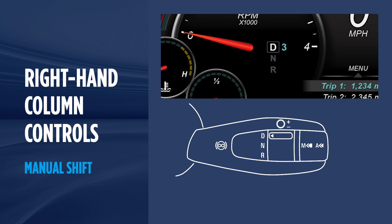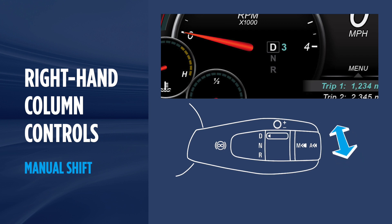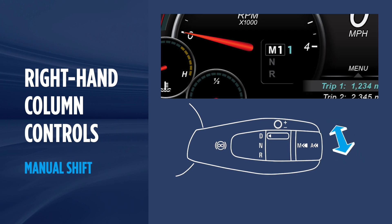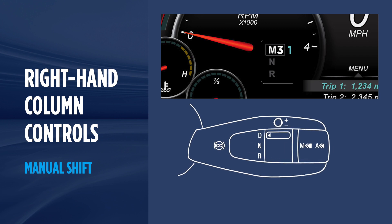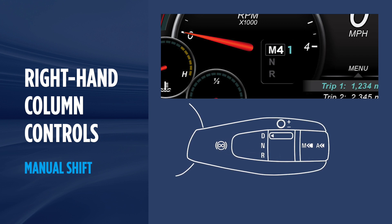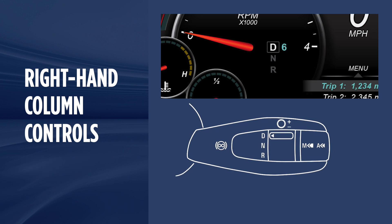Push the right-hand column control away from you to get into top gear selection mode. Then pull towards you to cycle through each gear. When you reach 5th gear, another shift will return you to Auto Drive.